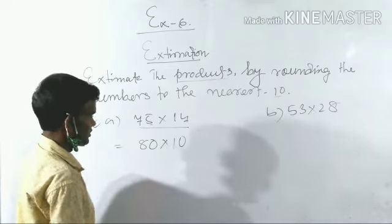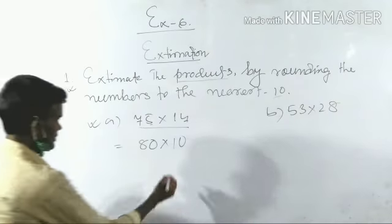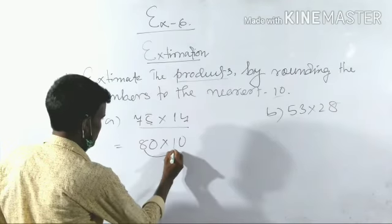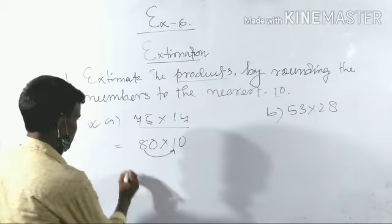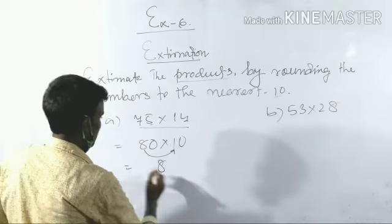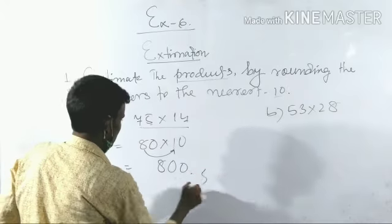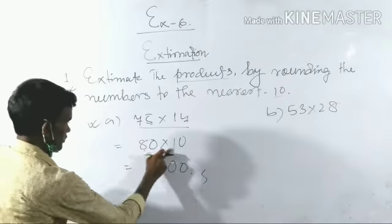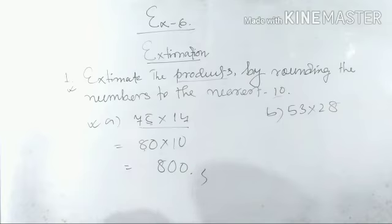Now we multiply 8 × 1, which is 8. Here is one zero and here is another zero, that means two zeros. So we add two zeros at the end: 800.